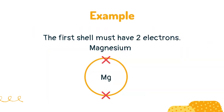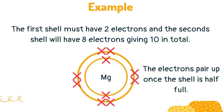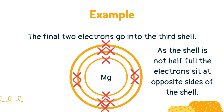The first shell must have 2 electrons, and the second shell will have 8 electrons, giving 10 in total. The final 2 electrons go into the third shell. As the shell is not half full, the electrons sit at opposite sides of the shell.